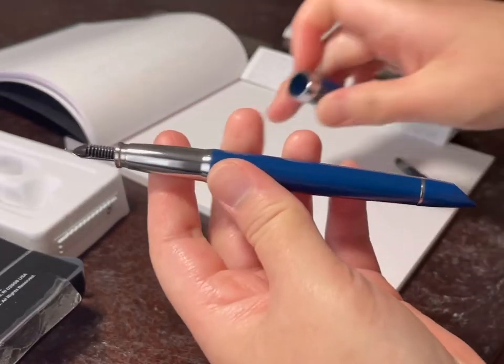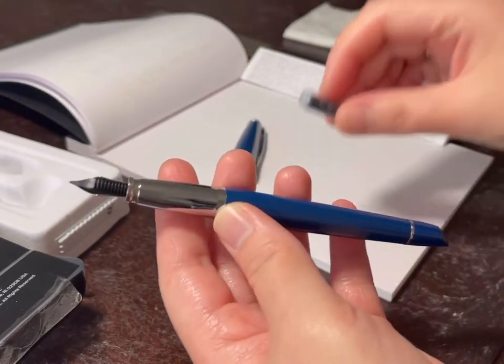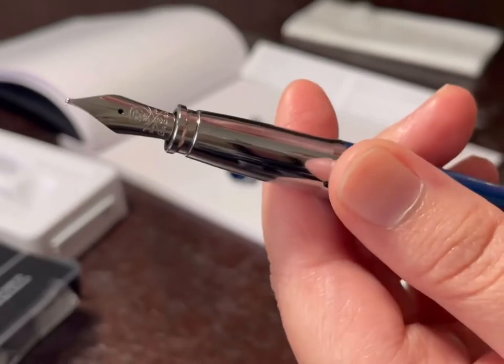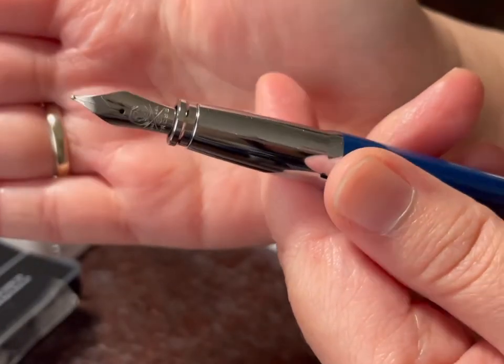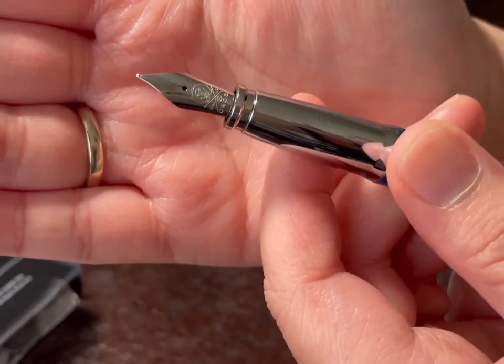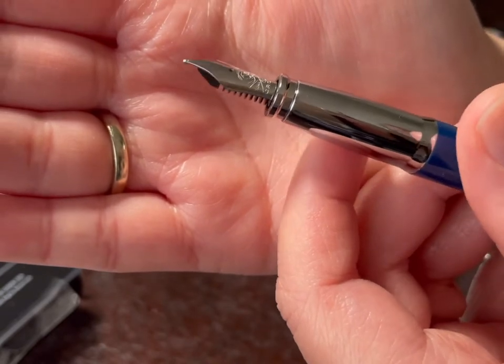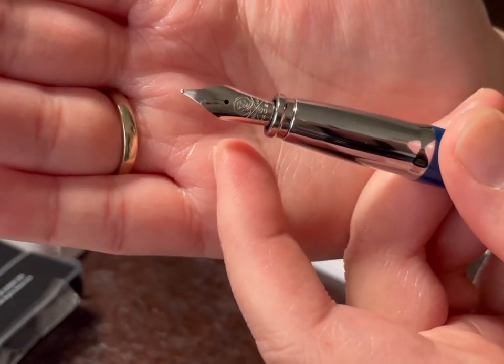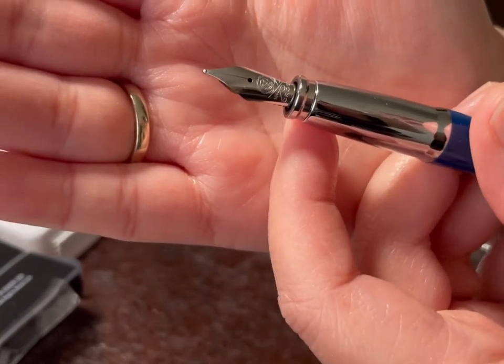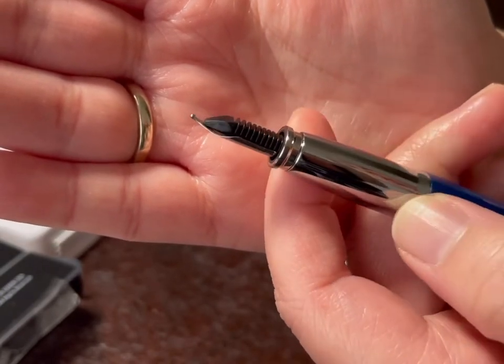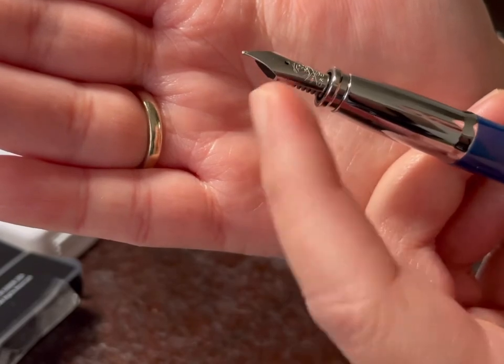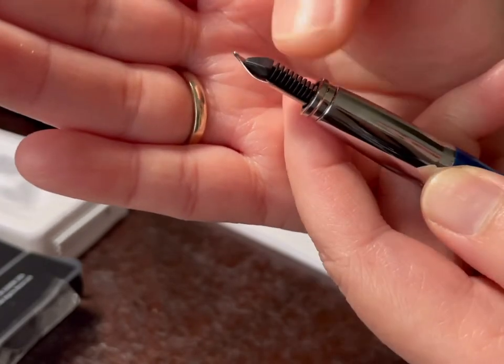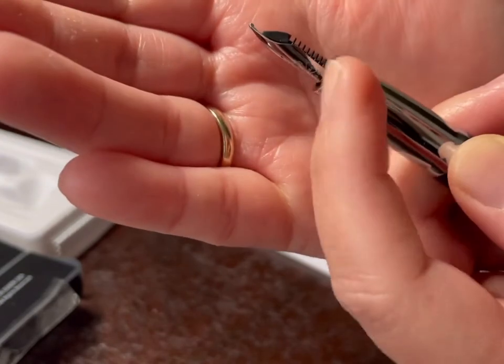So this is the ink cartridge. And this is how the nib looks like. I don't know, but it looks a little bit different. So you have the logo there. And I looked online on how other nibs look like. This looks like a different design.